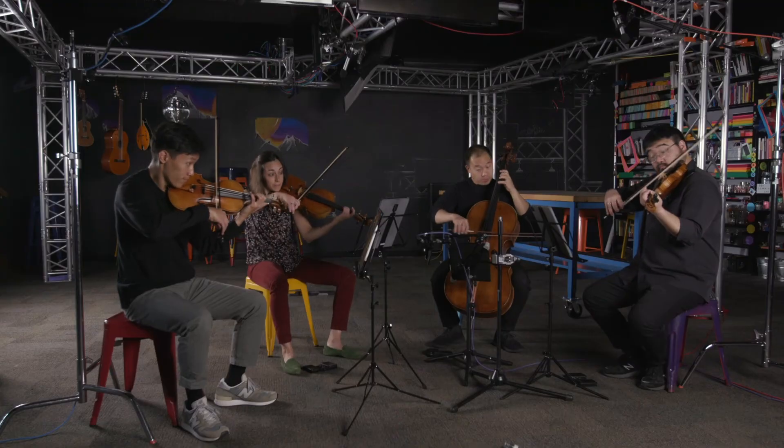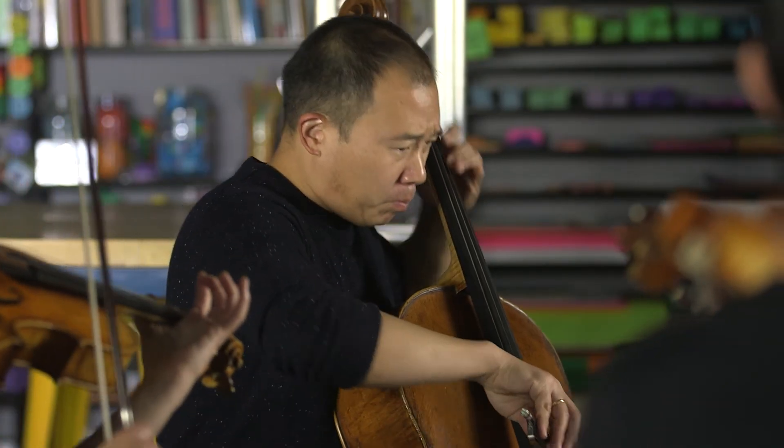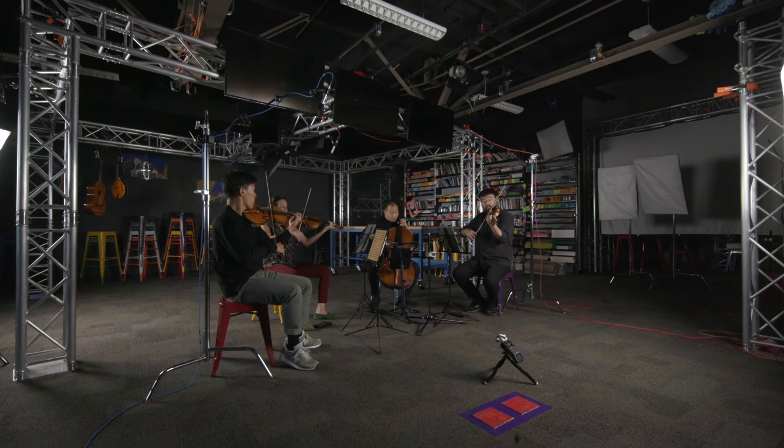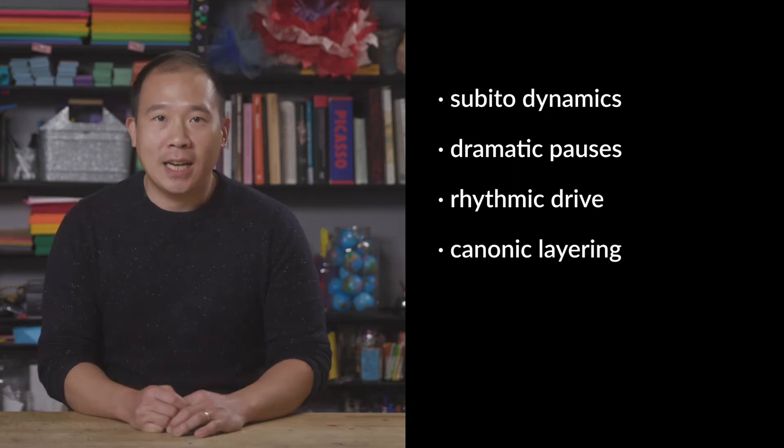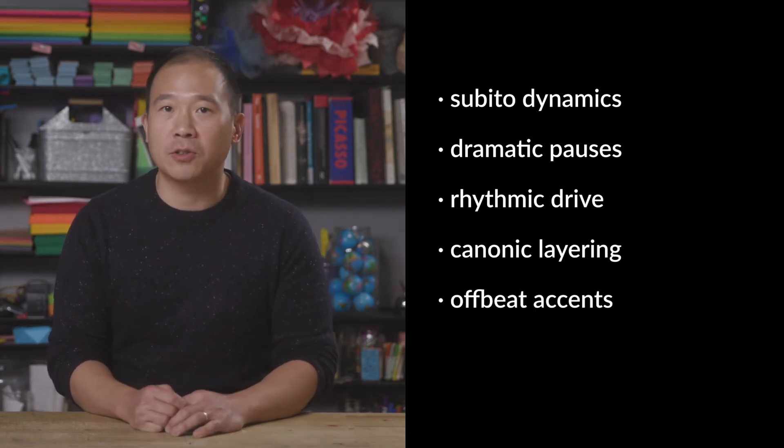Finally, the last movement is an allegro molto quasi presto. The cello asks the question first, with all the voices answering — another tidy classical 16 measure phrase. It's really interesting to hear how Beethoven creates drama and humor within this traditional structure with some of his trademark techniques: his usage of subito dynamics, dramatic pauses, rhythmic drive and vitality, canonic layering, series of offbeat sforzandos, and increased range of dynamics — all used to really maximize the sense of playfulness and humor. The piece ends rambunctiously, with the question posed at the beginning answered completely in the affirmative, the sense of finality heightened by a fermata placed over an empty bar of rest after the final two chords are heard.